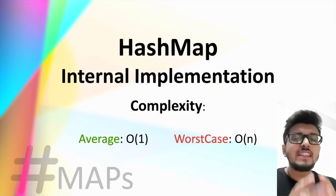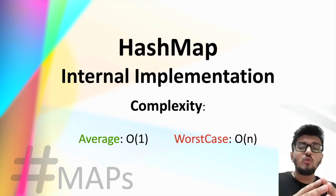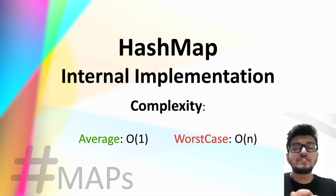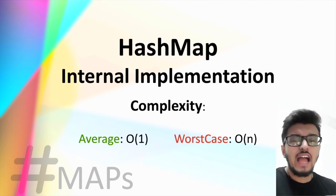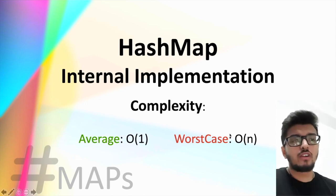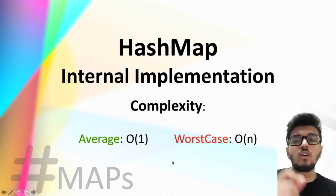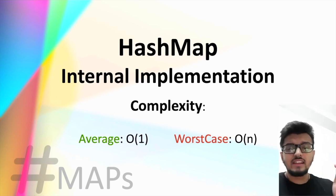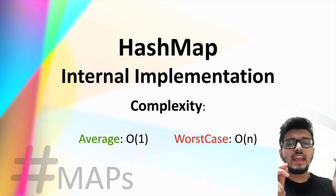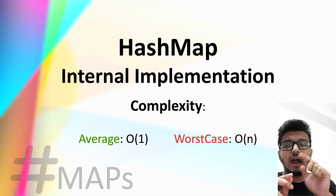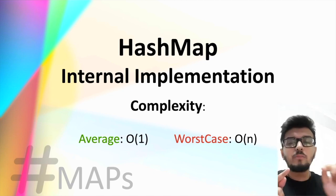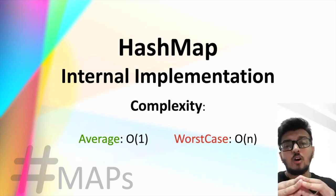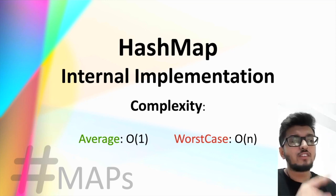So we have thoroughly understood the internal implementation of HashMap — how we insert data, how the HashMap grows its size based on conditions, and how we retrieve values. Regarding complexity: the average time complexity of a HashMap is O(1) — constant time. But in the worst case, the complexity is O(n), because we may create a linked list at a particular bucket with n entries, and iterating from the first to last node in that linked list is O(n). That is why the worst-case complexity for adding and retrieving is O(n).